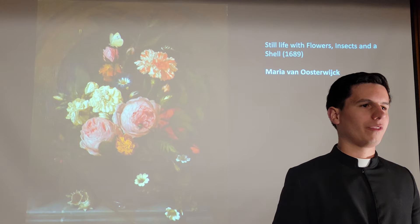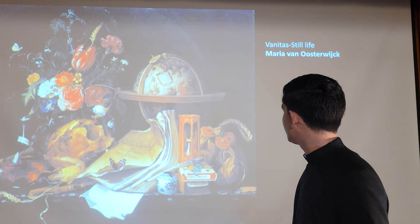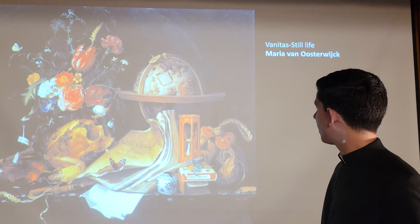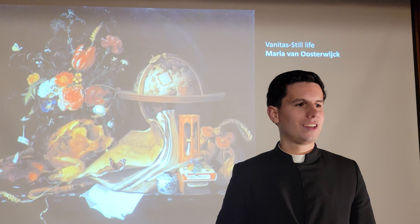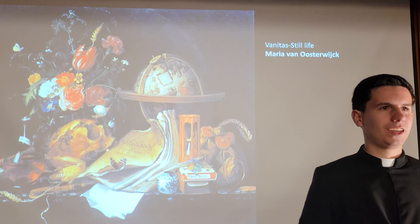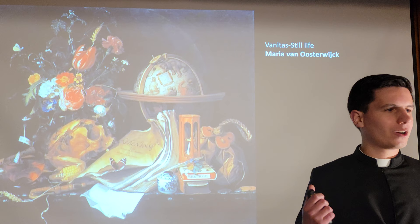Now we go to the next painting, also a still life. This is called Vanitas Still Life, also by Maria. What's curious about this painting is that it is called Vanitas — meaning vanity — but it is also depicting flowers. I found it interesting that she's painting flowers in the other work, and in this one she seems to say: yes, flowers are good, but they're also vanity.